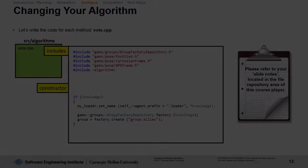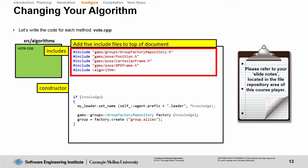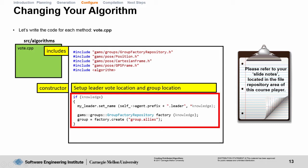Now that we're done with setting up the vote header file, let's look into implementing what needs to be done in the vote.cpp file. First, we're going to add five new includes to the top of the document. This includes the group factory repository class, the position class, and the Cartesian frame and GPS frame classes. Next, in the constructor class for vote, we're going to add some initialization code for our myLeader string container, as well as setting up the group factory repository to point to group.allies.